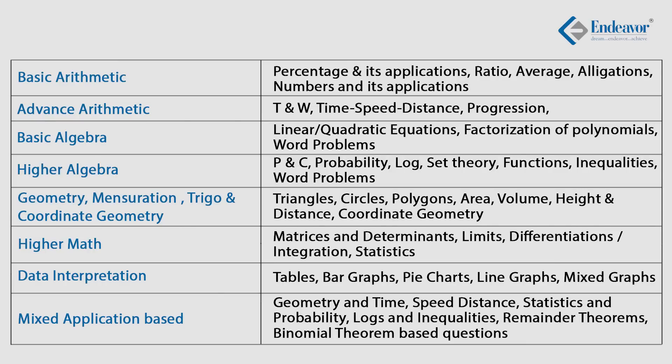This particular section can be broadly divided into 8 different units. The first unit is basic arithmetic, which covers chapters like percentages, profit and loss, simple interest, compound interest, ratio, average, allocation, and time and work. Time and work and time and distance can be considered advanced arithmetic — these two chapters will have a lot of word problems and mixed applications.